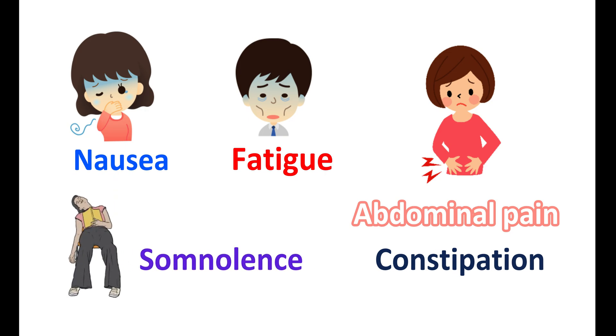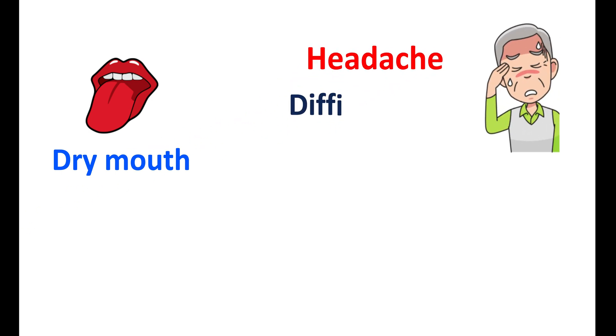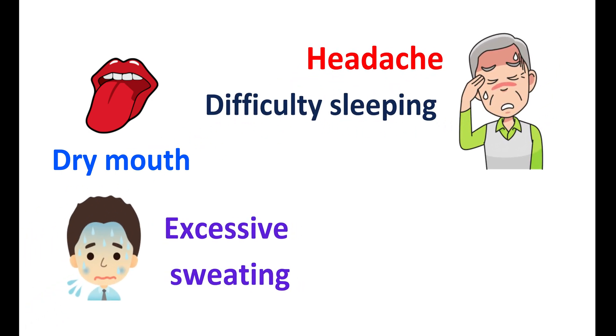Dry mouth is another important side effect produced by this medication and it can also produce headache and difficulty sleeping. Excessive sweating can also be observed with use of Atomoxetine. In men, Atomoxetine can produce delayed ejaculation and prolonged erection.